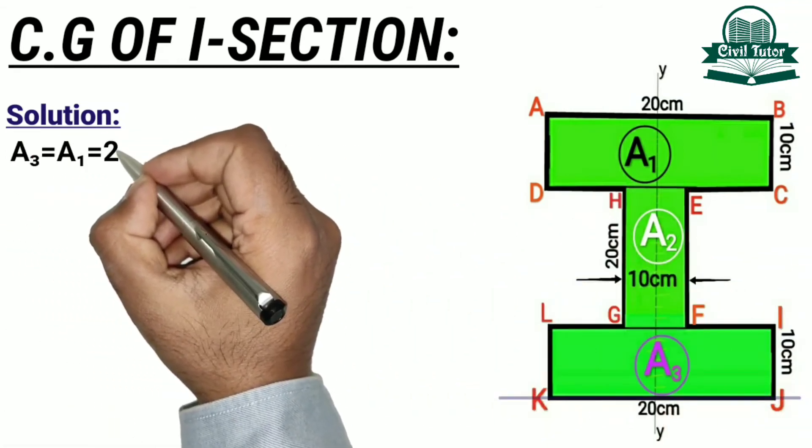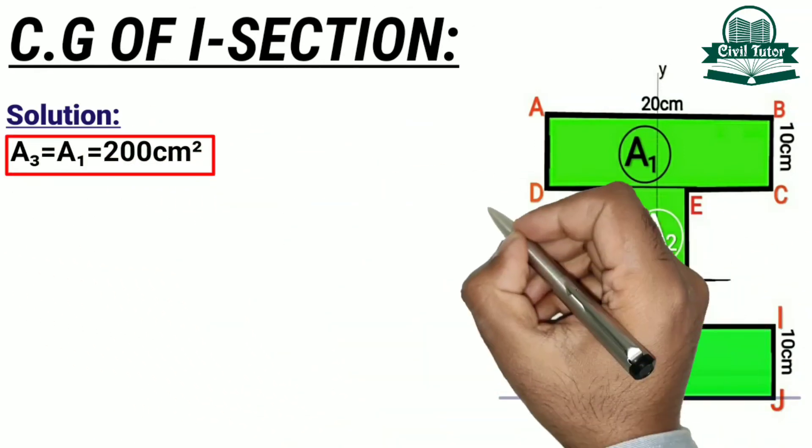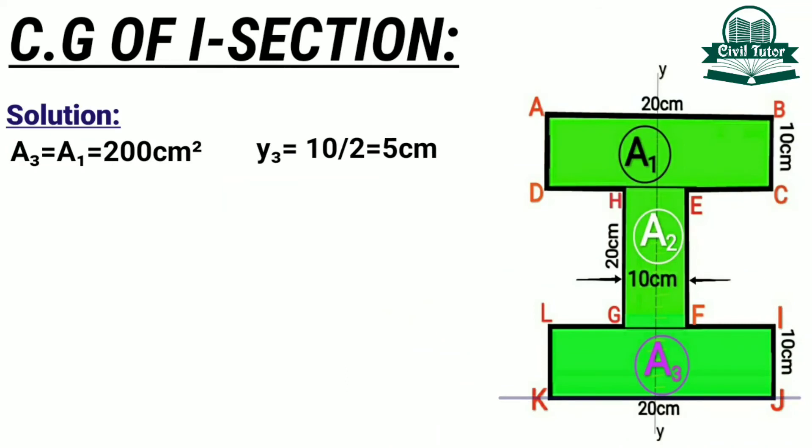We already know area 3 is equal to area 1 equal to 200 cm square. And Y3 will be equal to 10 cm divided by 2 equal to 5 cm.